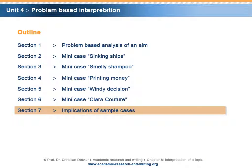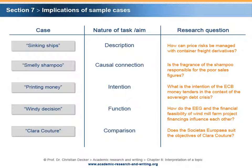Section 7 – Implications of sample cases. The matrix summarizes the five sample cases, their aims and their research questions. Typically, a problem setting will provide a context that helps with the interpretation of a topic.